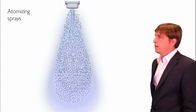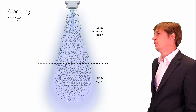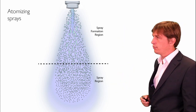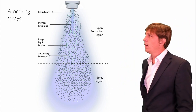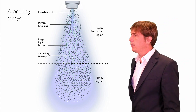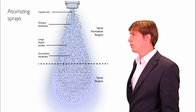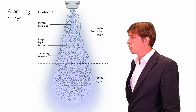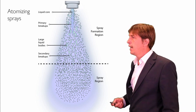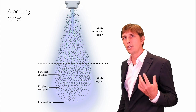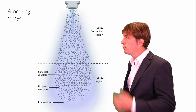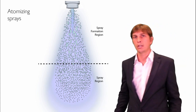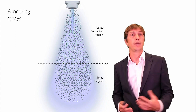Atomizing sprays can be described in the following way. First of all, we have two regions: the spray formation region near the nozzle and the spray region further down. In the spray formation region, one may observe a liquid core. Primary breakups are occurring, resulting in the formation of large liquid bodies and ligaments. Then those large liquid structures will break up a second time, resulting in the formation of smaller droplets, which will be spherical and transported and evaporate in the spray region.